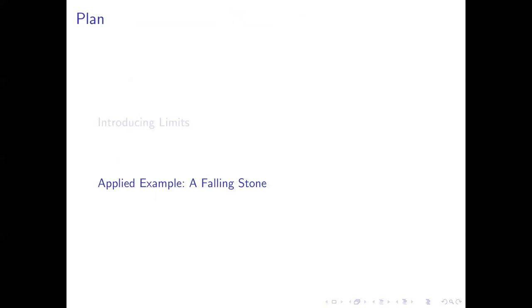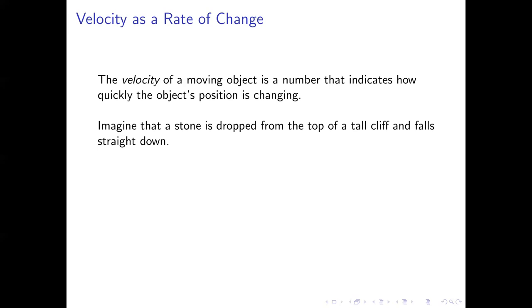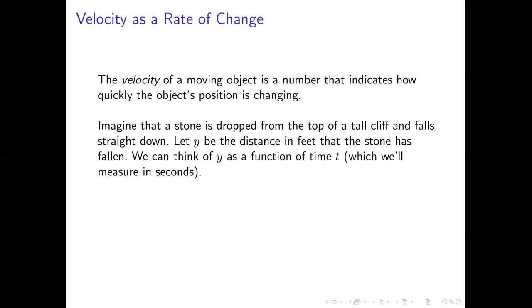Let's look at a more applied example drawn from physics to see what limits allow us to do. We need a little vocabulary: the velocity of a moving object is a number that represents how quickly the object's position is changing. Imagine you're standing at the top of a very tall cliff, you drop a stone off the side, and it starts falling straight down. We'll use the letter Y to represent the distance in feet that the stone has fallen. As time passes, the stone falls further and further, so we can think of Y as a function of time T, measured in seconds.